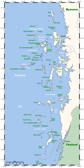Continental fragments correspond to land masses that have separated from a continental mass due to tectonic displacement. The Farallon Islands off the coast of California are an example.